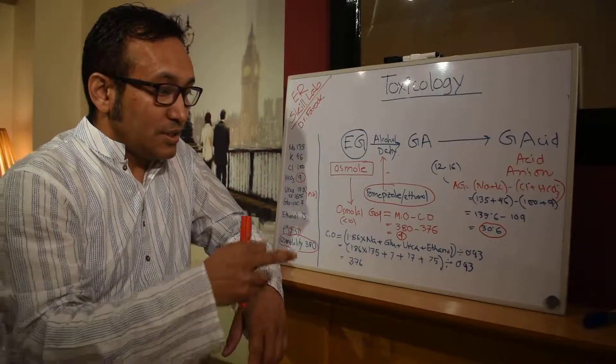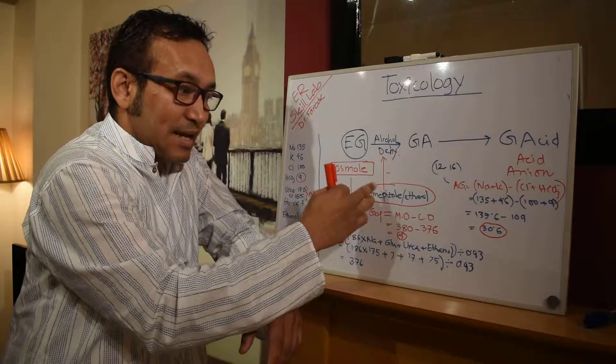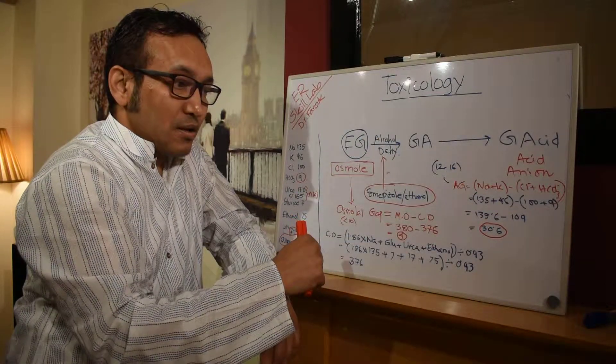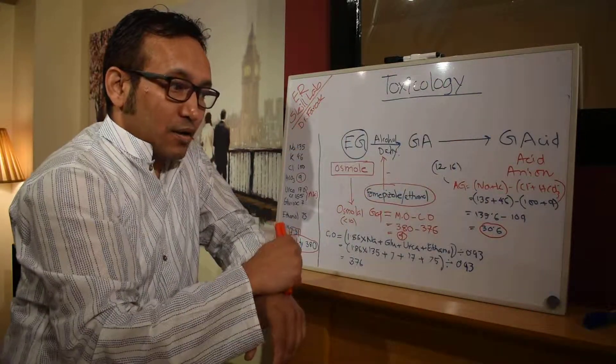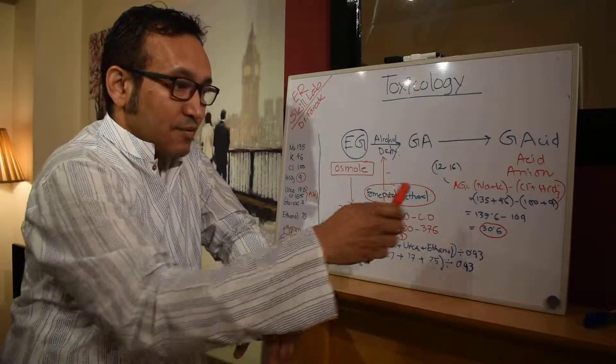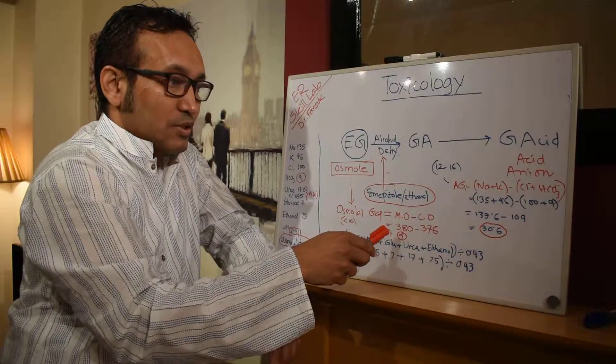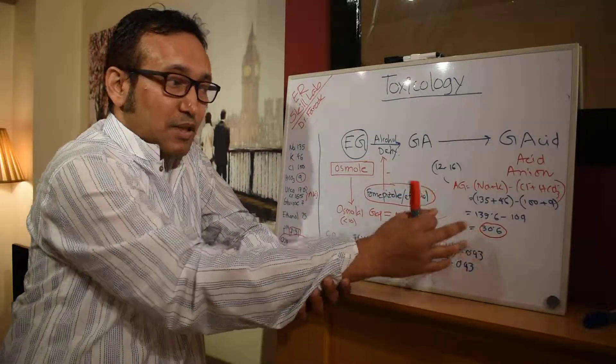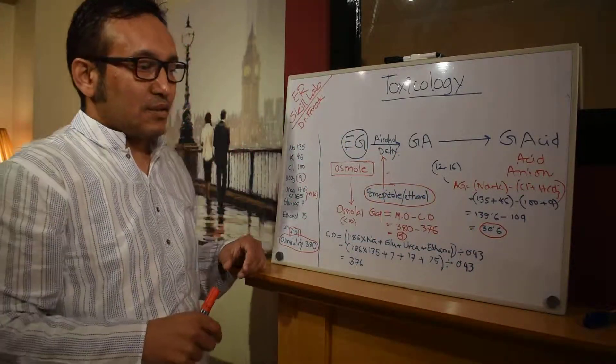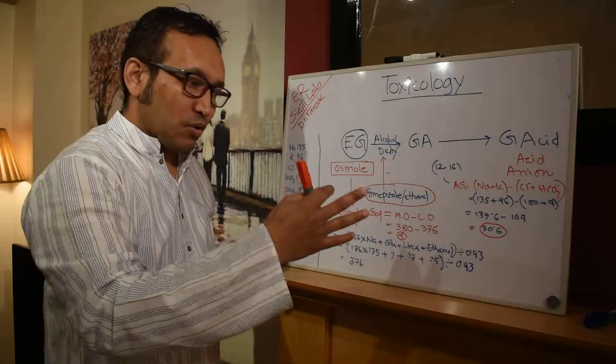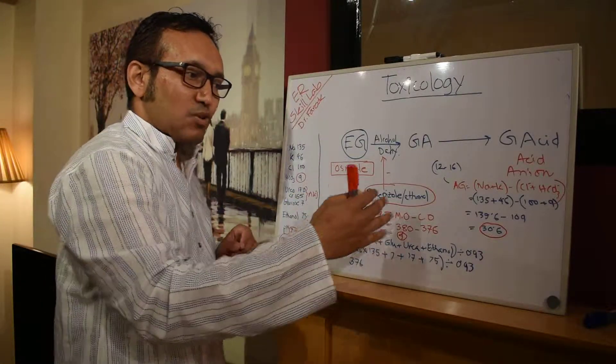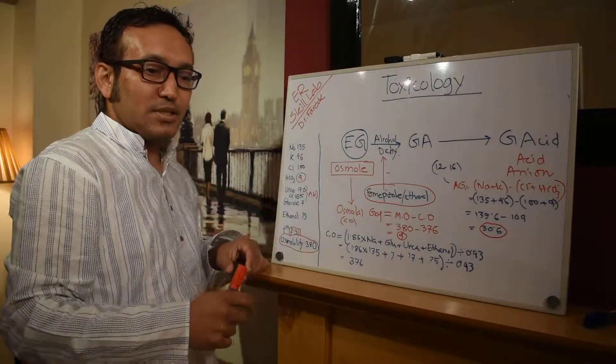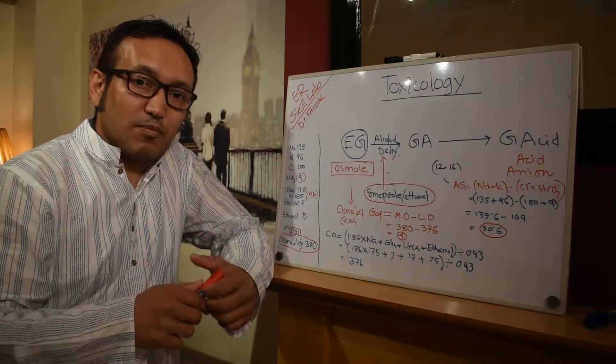Should we still continue fomepizole? Yes if it's a high osmolal gap and normal anion gap. Do we continue to hemodialysis? Yes if it is high anion gap but normal osmol, we need to stop fomepizole and start hemodialysis. But there maybe is some middle ground where we can think about both, a high osmolality as well as a little bit of anion acid, so it can be an overlapping state which we might be thinking about both.